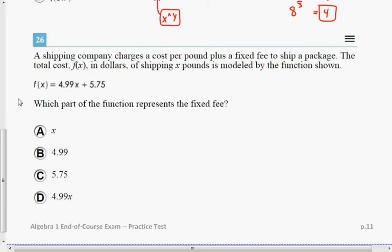Okay, number 26. A shipping company charges a cost per pound plus a fixed fee to ship a package. The total cost f(x) in dollars of shipping x pounds is modeled by this function here.